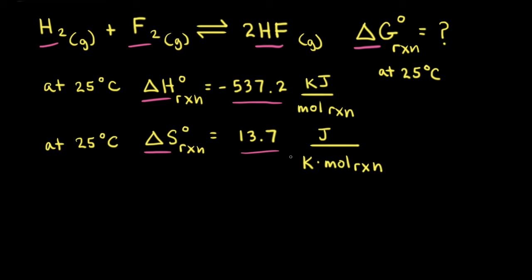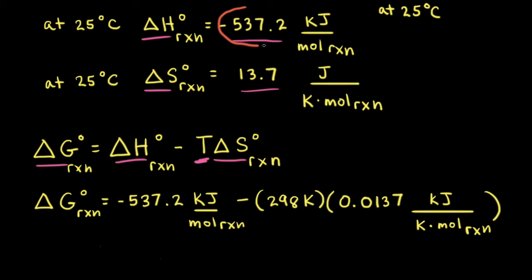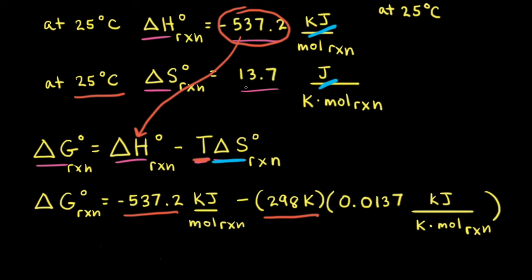The next step is to plug everything into our equation. To calculate delta G naught of reaction, we need delta H naught of reaction, delta S naught of reaction, and the temperature in Kelvin. Delta H naught is negative 537.2 kilojoules per mole of reaction. The temperature is 25 degrees Celsius, which converts to 298 Kelvin. We must be careful with units since delta H naught is in kilojoules and delta S naught is in joules. So we convert delta S naught to 0.0137 kilojoules per Kelvin mole of reaction.